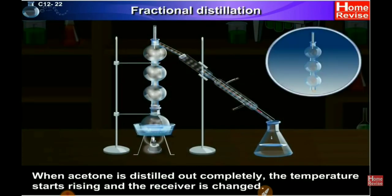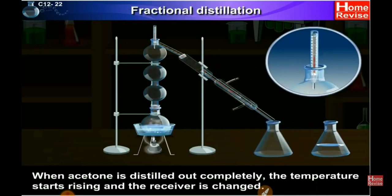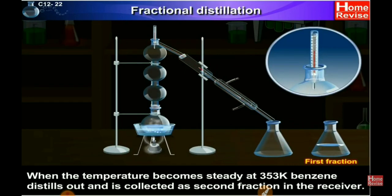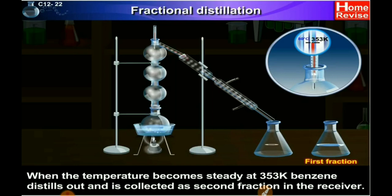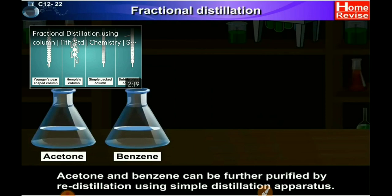When acetone is completely distilled out, the temperature starts rising and the receiver is changed. When the temperature becomes steady at 353 Kelvin, benzene distills out and is collected as the second fraction in the receiver. Acetone and benzene can be further purified by re-distillation.